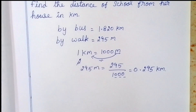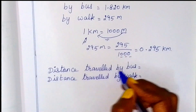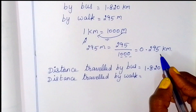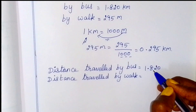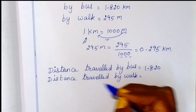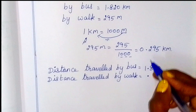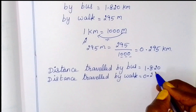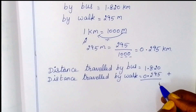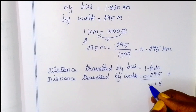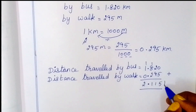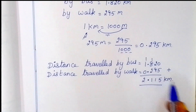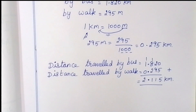Total distance: distance traveled by bus is 1.820, decimal point straight. Distance traveled by walk, decimal point is straight, before place a 0. So 0.295. Now add — decimal point is aligned, decimal point is straight.